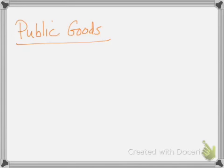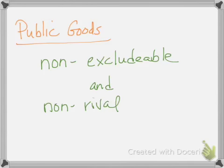A public good is really a theoretical construct — it's very difficult to find a pure public good that exists in the real world. Typically there are close examples, but not perfect ones. A public good is the direct opposite of a private good: it is non-excludable and non-rival. You can't stop people from enjoying the benefit of the good even if they haven't paid for it, and one person's consumption doesn't affect anyone else's consumption.